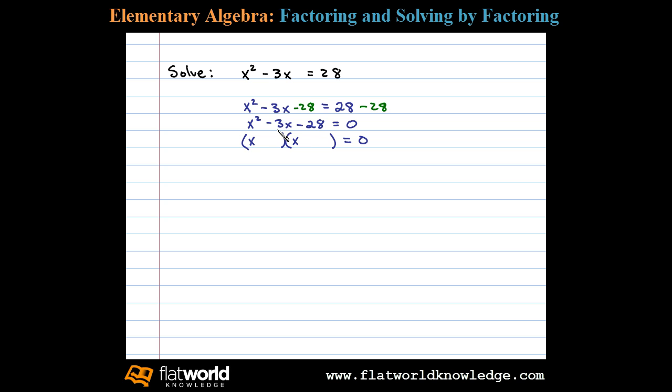So we can write x plus 4 times x minus 7. Notice here positive 4 times negative 7 is negative 28, and the middle term adds up to negative 3x.